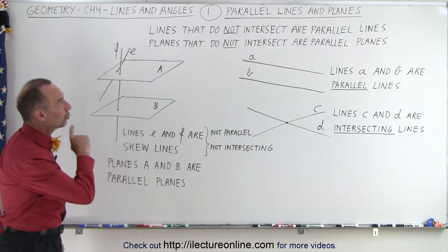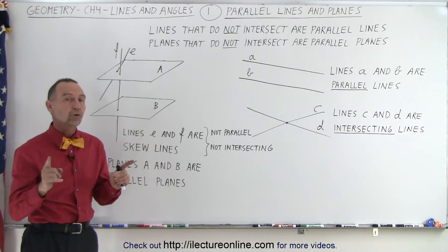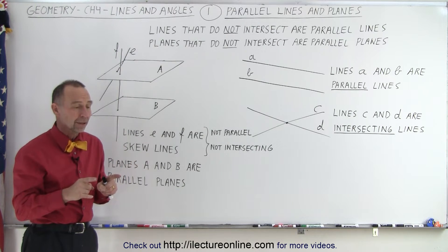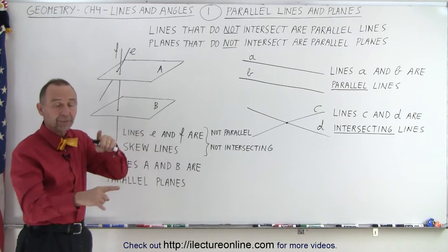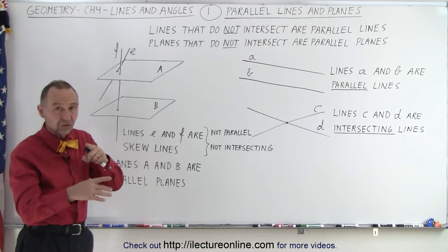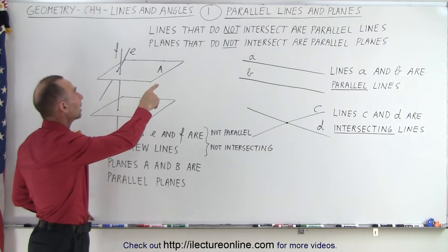Parallel lines are lines that do not intersect. They must also be on the same plane, because we can have lines that are not parallel and also do not intersect if they're not on the same plane. So as long as they're on the same plane, lines that do not intersect are parallel lines.